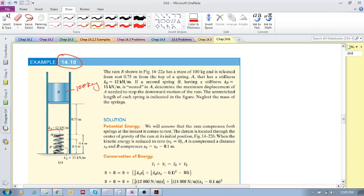The ram is 0.75 above the top of A. The idea is that we drop this ram and it's going to fall onto the springs and compress them. We assume it compresses both of them.